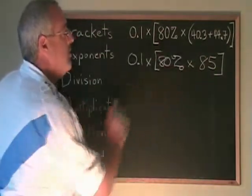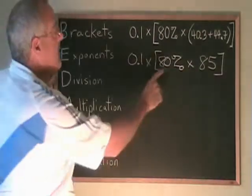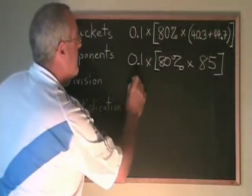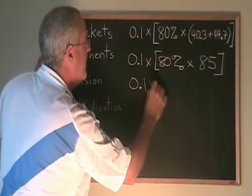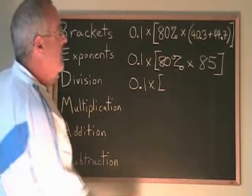Now I have two multiplications and the bracket is going to force me to do this one first. I am doing 80% times 85. The first thing I am going to do is convert 80% into a decimal.